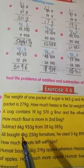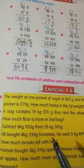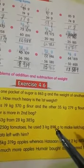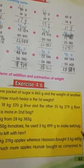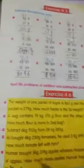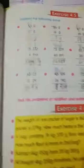Ali ne 4 kg 250 gram tomato kharide. Usne isme se 3 kg 899 gram ketchup ke liye istemal kar liye. Ab uske paas kitne tomato bache? Hum isme se minus karenge. Jo answer aayega wo uske paas tomato bache hain.